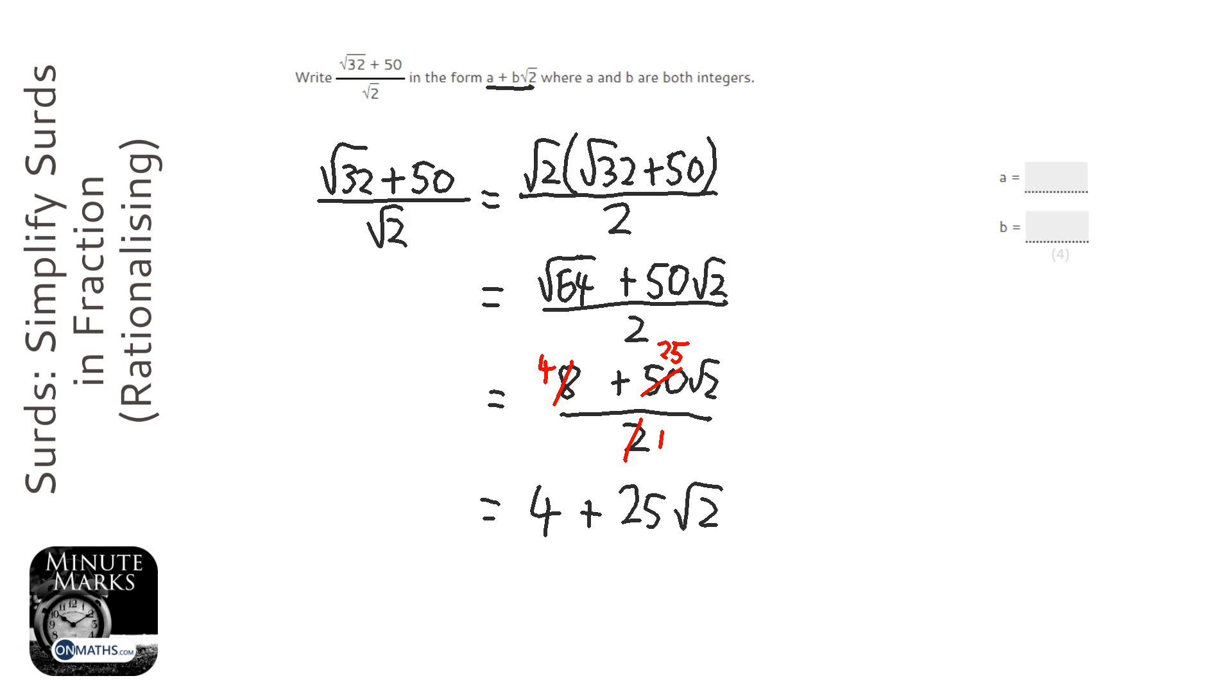So the A, the bit at the start, is going to be 4. And the B is going to be 25.